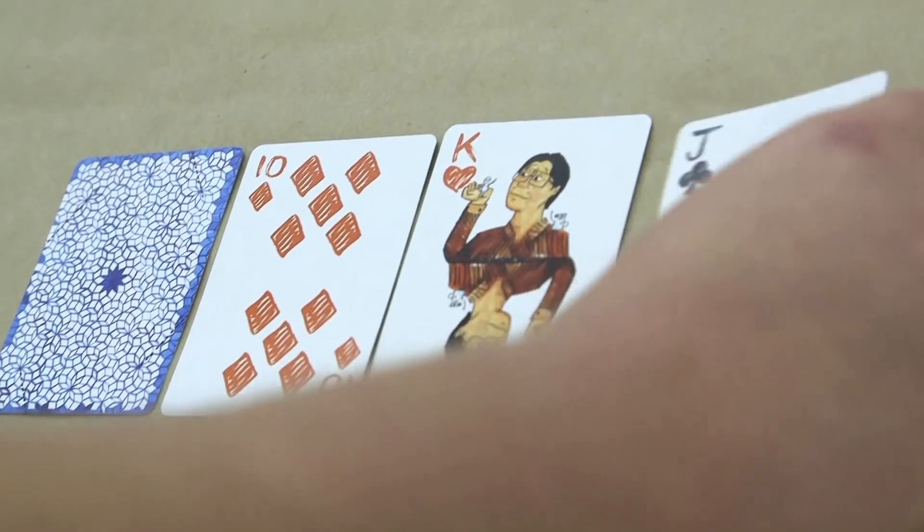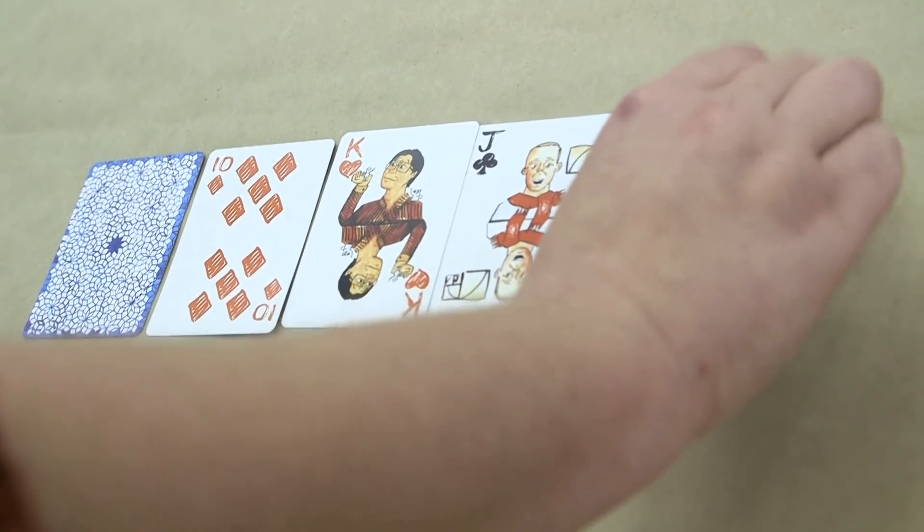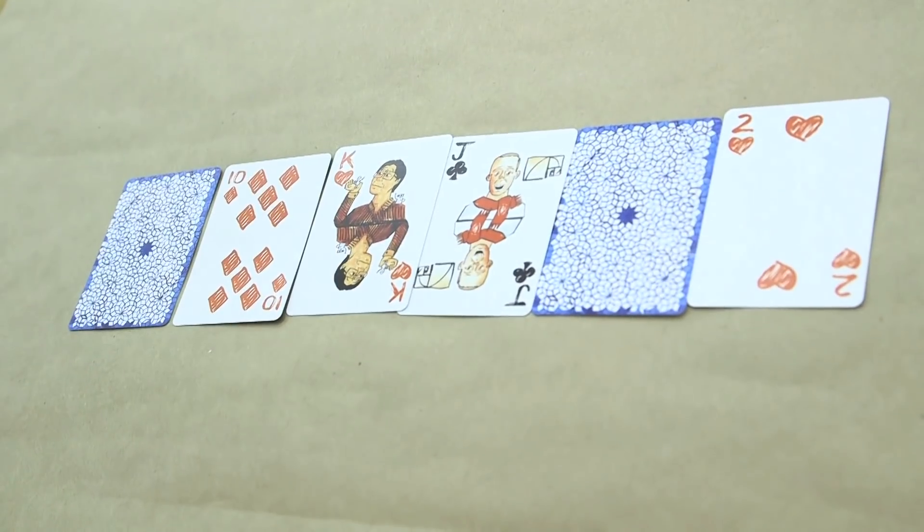Now I'm going to deal out another six cards and see if we can win a second game. All right, now I can tell you right now this game is not winnable. Even if I played with optimum strategy, nothing will work.